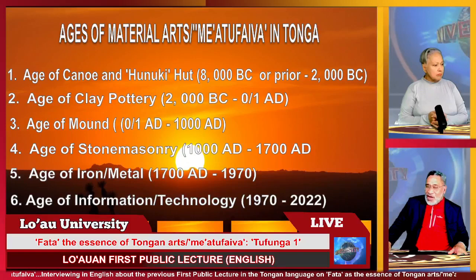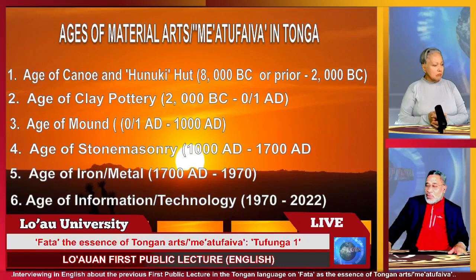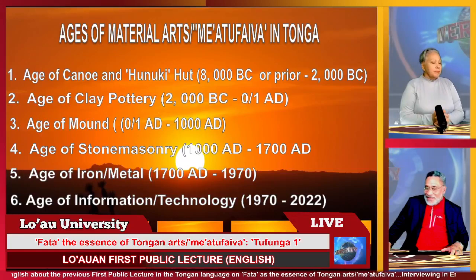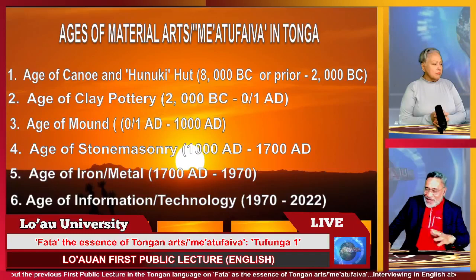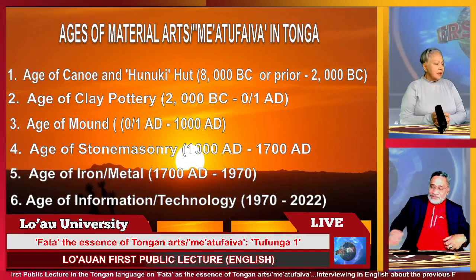The Ages of Material Arts — Mea Tu'u Thaiba — in Tonga. The first age is the Age of Canoe and Hunuki Hut, roughly from 8,000 BC or prior to 2,000 BC. That's why I showed the map before, because as I go through it will relate to the early settlement of the Pacific. You can see it's quite self-explanatory — you've got the ages and the years there quite clearly.